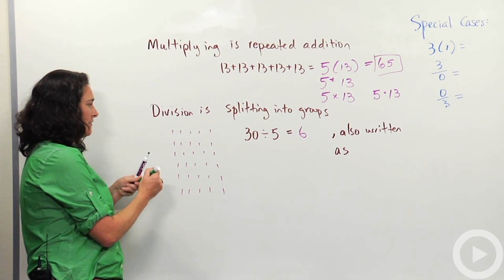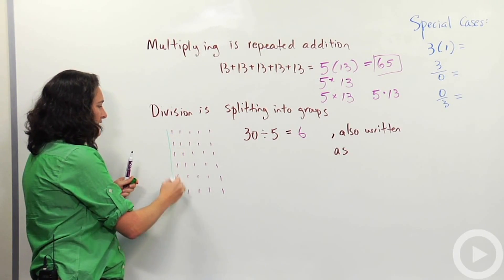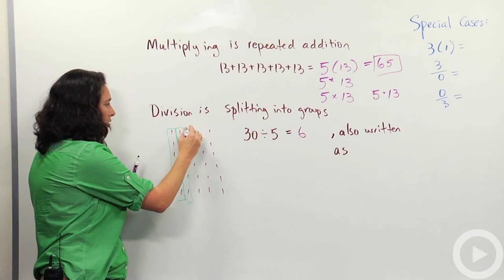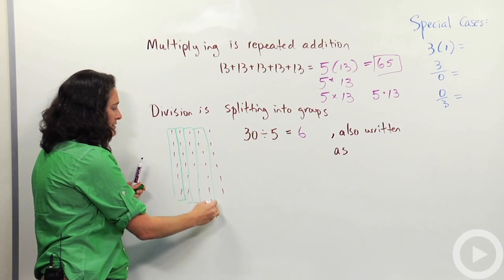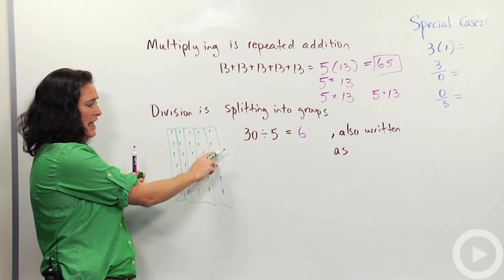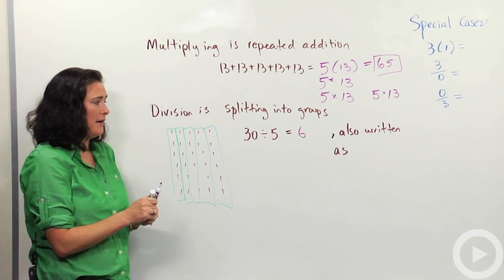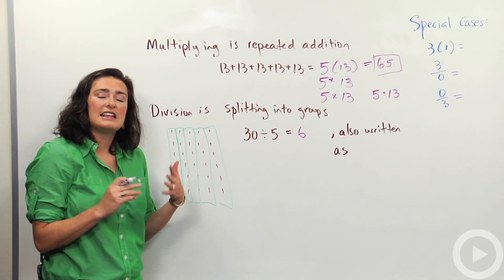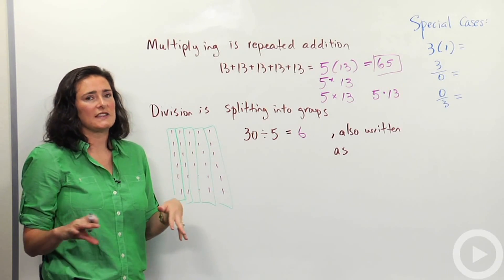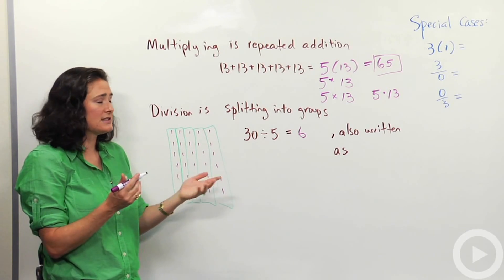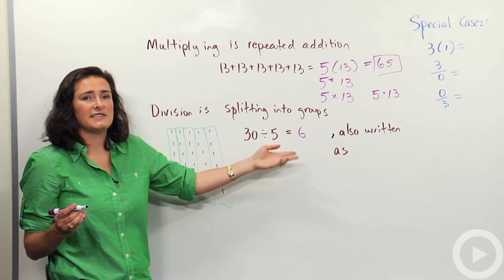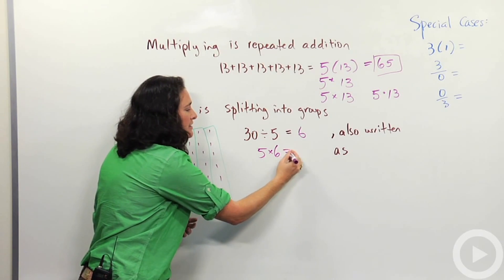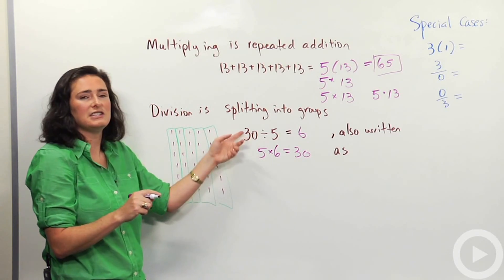If I split 30 dots into 5 even groups, I'm going to end up with 6 groups. I have 5 groups and each one has 6 of those little marks in them. So 30 split into 5 groups is equal to 6. Division and multiplication are doing and undoing — they're what we call opposite operations. Some of you who know that 30 divided by 5 is 6 might have learned it first backwards: 5 times 6 is equal to 30. Those are the same thing written in a different way.